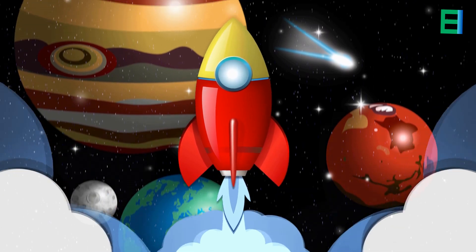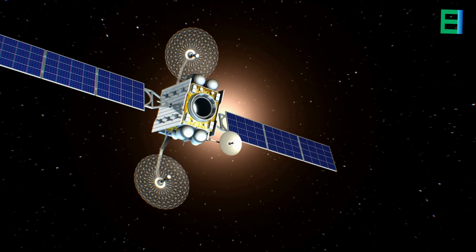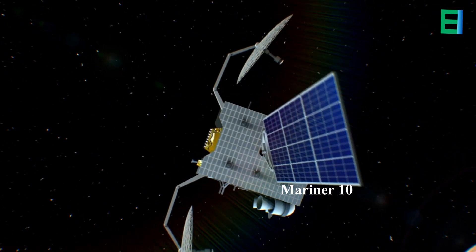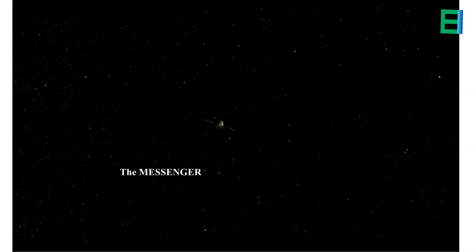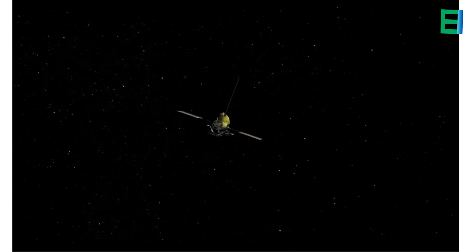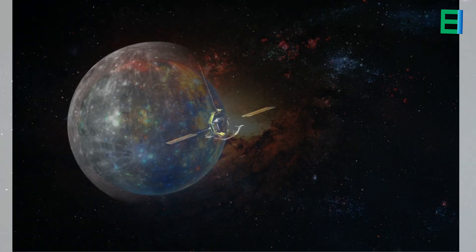So far, only two spacecraft have been sent to explore Mercury. NASA's Mariner 10, launched in 1973, was the first to fly by and capture close-up images of the planet. And the MESSENGER, launched in 2004, orbited Mercury from 2011 to 2015, providing extensive data and images of the planet.